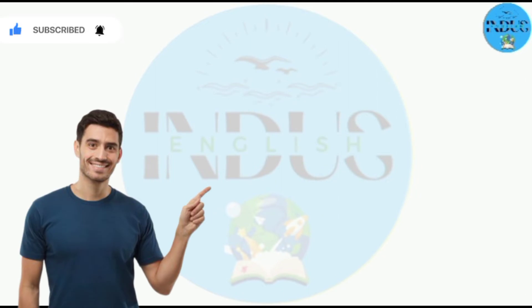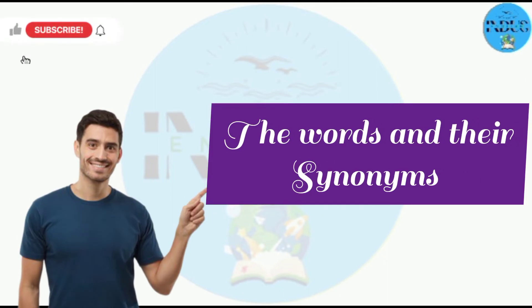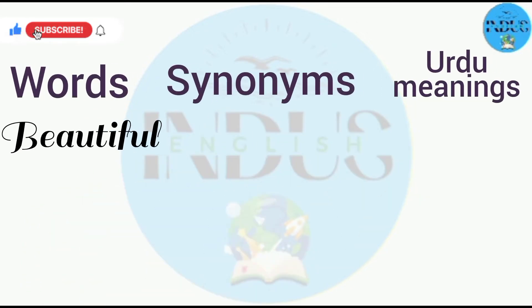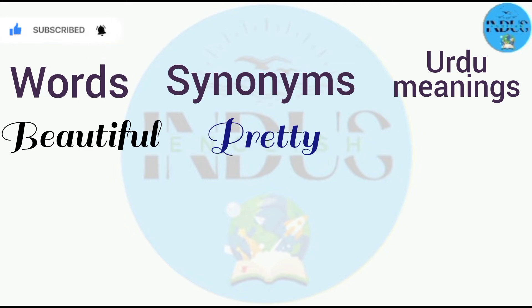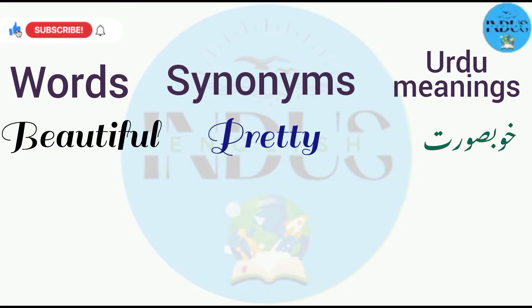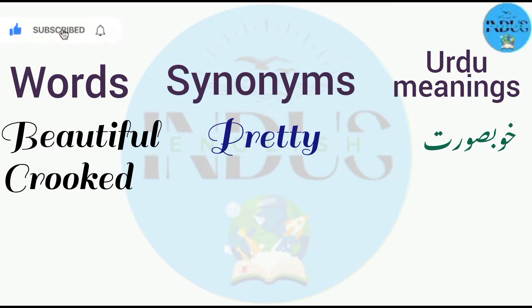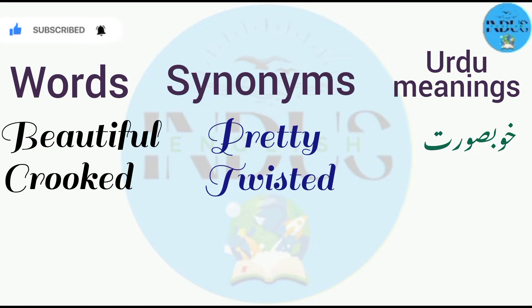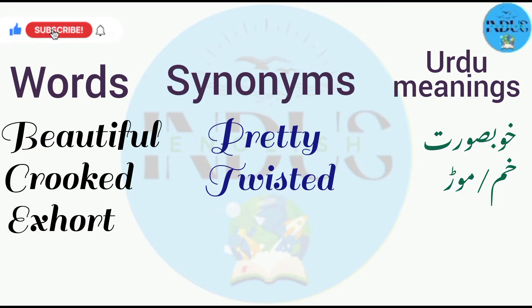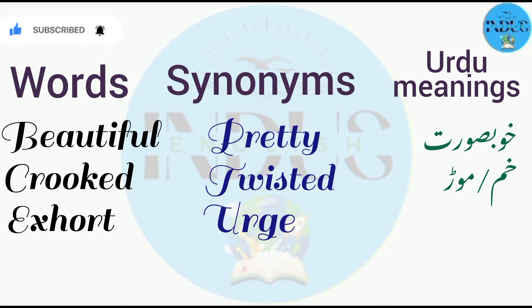Beautiful — the synonym is pretty. Urdu meaning is hoopsurat. Crooked — synonym is twisted. Urdu meaning is khum ya mor.